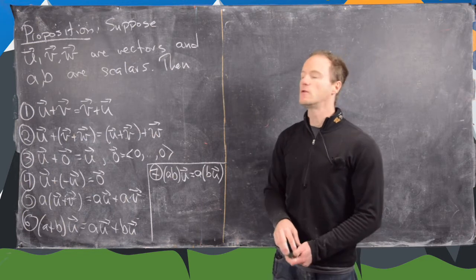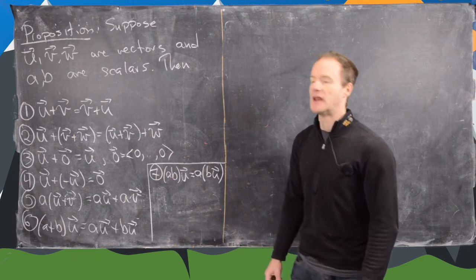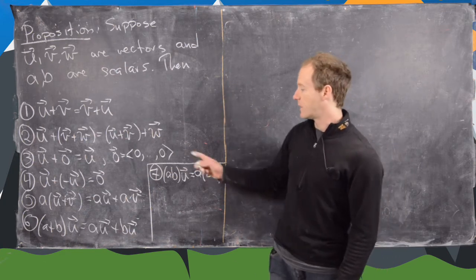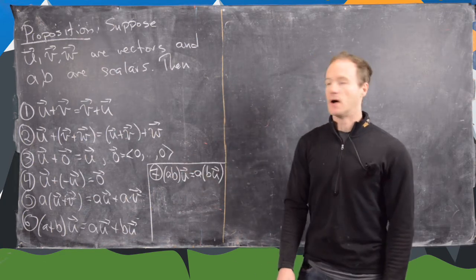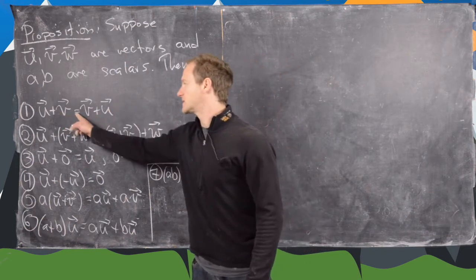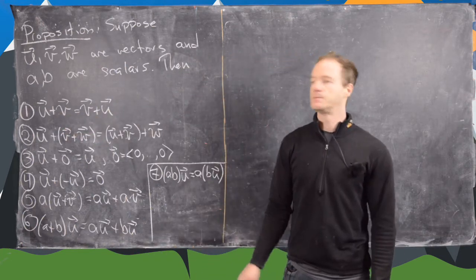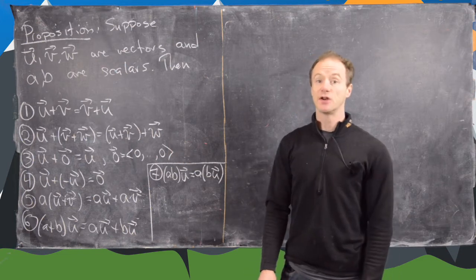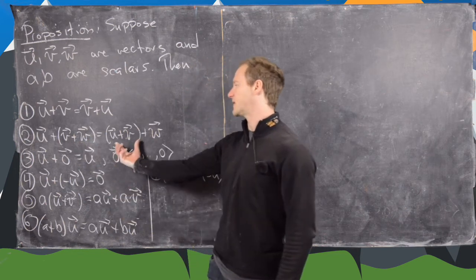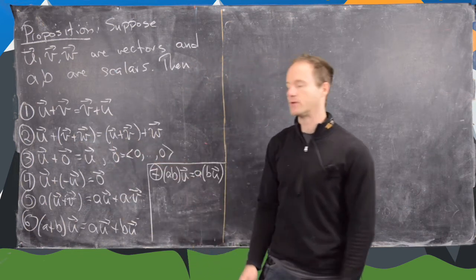So we're not going to prove all the parts, but we'll prove a couple. So let's suppose that u, v, and w are vectors and a and b are scalars. So they're just real numbers. Then we have the following seven properties. So the vector addition is commutative: u plus v equals v plus u. The vector addition is associative: u plus the quantity v plus w is the same thing as the quantity u plus v plus w.